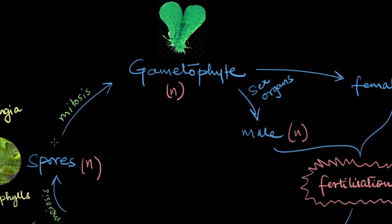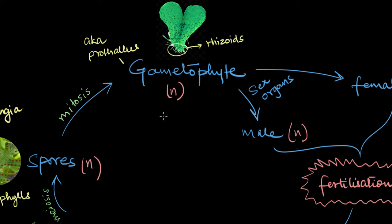In ideal conditions, each spore divides mitotically and grows into the gametophyte, which is the haploid stage of the pteridophyte life cycle. The gametophyte, also called the prothallium or prothallus, is really small and barely 1 cm in size. However, despite its size, it's completely independent just like the sporophyte. It can easily gather raw ingredients like water and minerals from the soil with the help of thread-like structures called rhizoids.